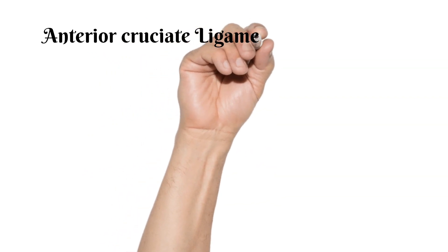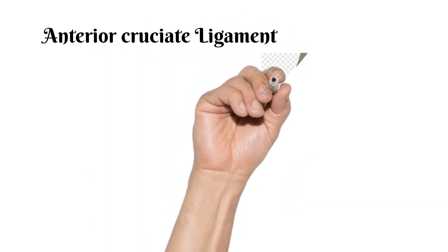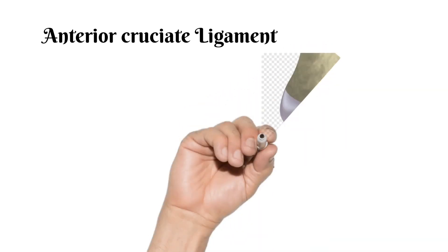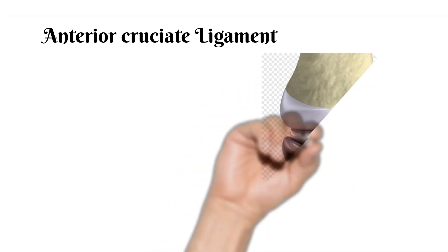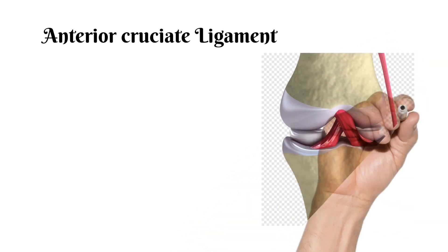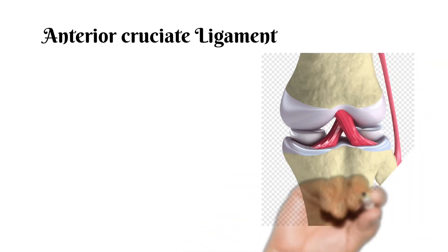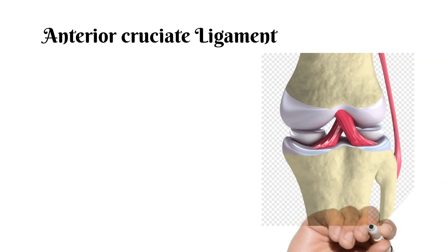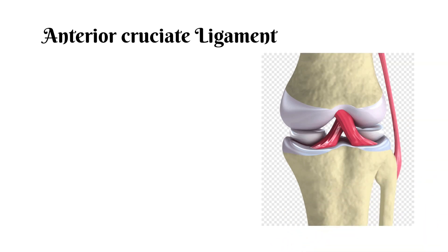Regarding the anterior cruciate ligament, it is a dense structure with 90% type 1 collagen and 10% type 3 collagen, running from the posterior medial aspect of the lateral femoral condyle to a broad insertion anterior and between the intercondylar eminence on the tibia. On average it is 33 millimeters long and 11 mm in diameter.